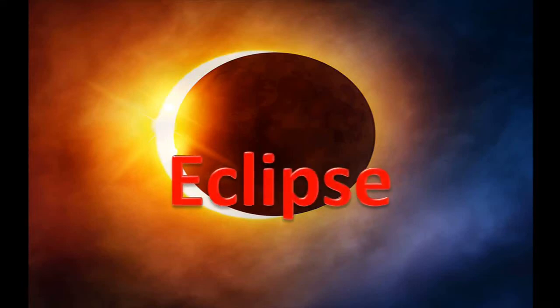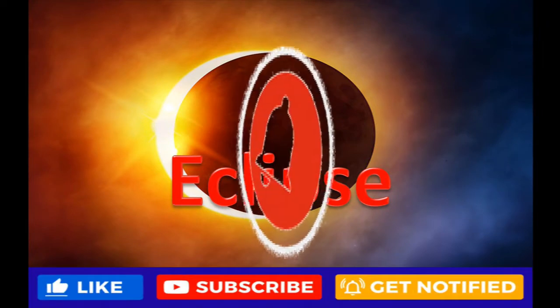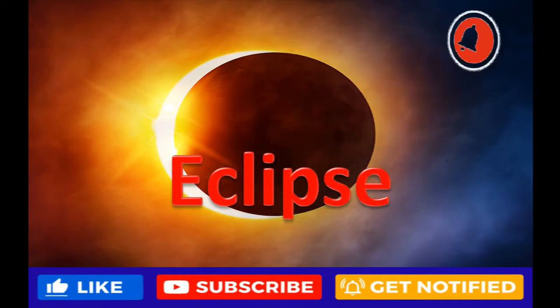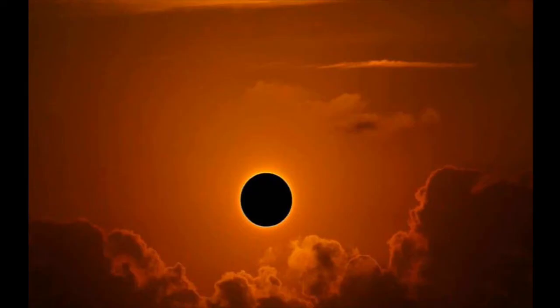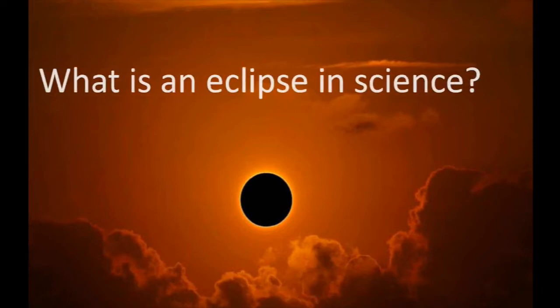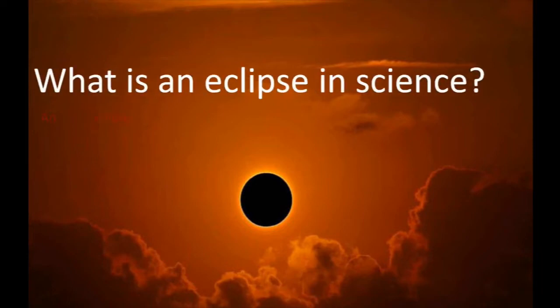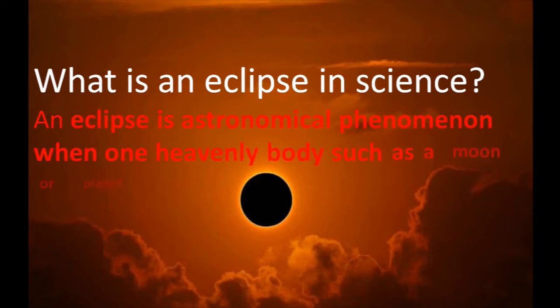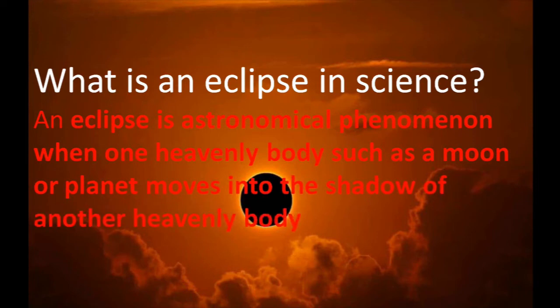Eclipse. What is an eclipse in science? An eclipse is an astronomical phenomenon when one heavenly body, such as a moon or planet, moves into the shadow of another heavenly body.